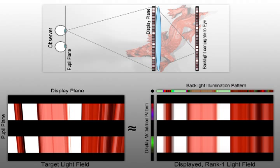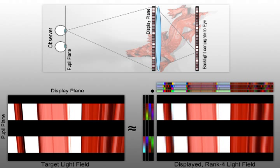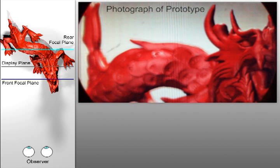Through non-negative matrix and tensor factorization, we decompose the target light field into a set of modulation patterns. The patterns are shown on the display at a high refresh rate and are perceptually averaged by the observer, effectively synthesizing a low-rank approximation of the target light field.